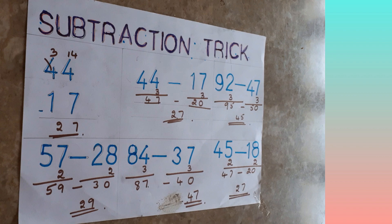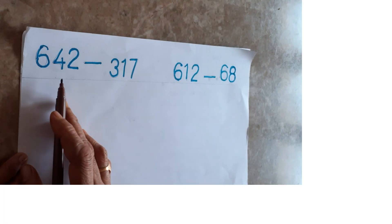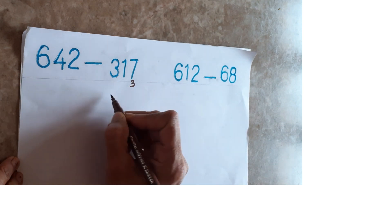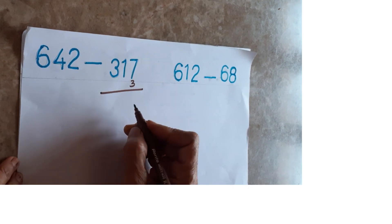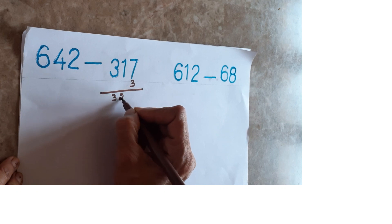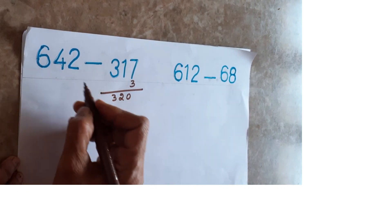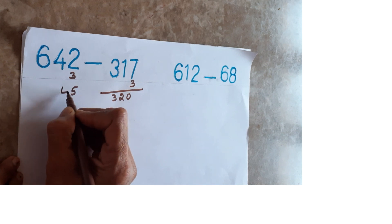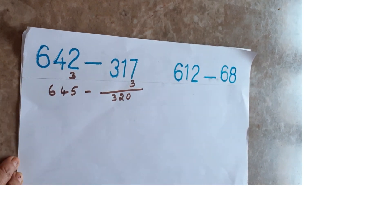Now I will tell you 3 digit number. 642 minus 317. 7 means here also you have to add 3. Then it will become 320. And this same number you have to add here also. 5, 4, and 6. Now do the subtraction.